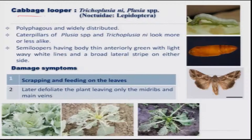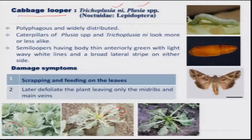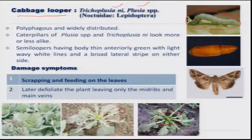For the cabbage looper, two species of semi-loopers are found — Trichoplusia ni and Plusia species. They cause similar damage such as irregular holes on the leaves, and in severe cases, complete defoliation, resulting in stunted growth, non-formation of the head region, and complete yield loss. The caterpillar can be identified by its very characteristic semi-looping movement while feeding on the leaves.